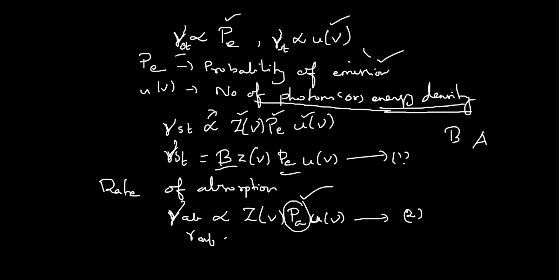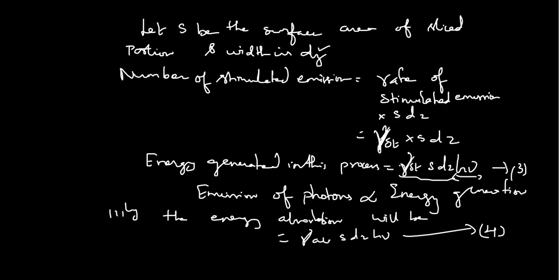Rate of absorption equals B · Z(ν) · P_A · U(ν), which is equation 2. Let S be the surface area of the sliced portion. With thickness dz, the number of stimulated emissions equals the rate of stimulated emission R_st multiplied by S · dz, where S · dz is the volume of the slice.